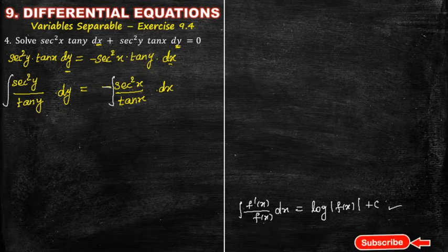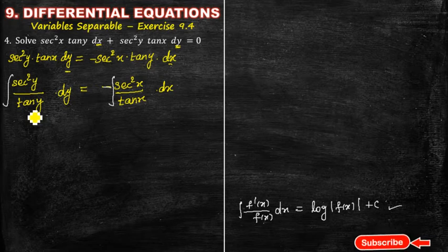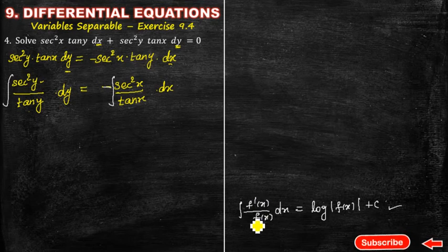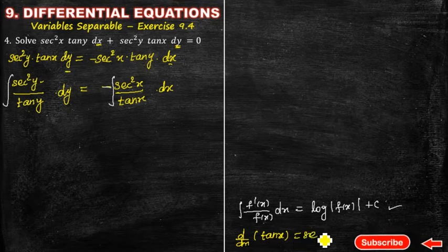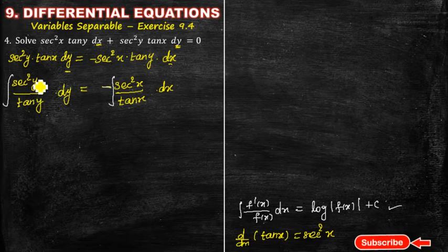So, using this formula, given denominator value, f of x is tan x. So, tan x is the difference between secant squared x. Correct? So, tan x differentiated d by dx of tan x is secant squared x.